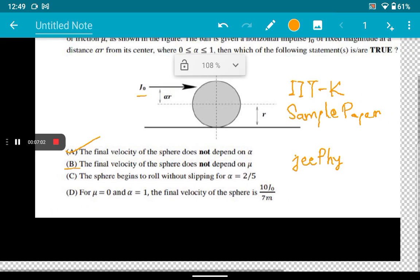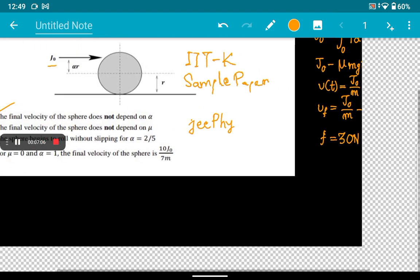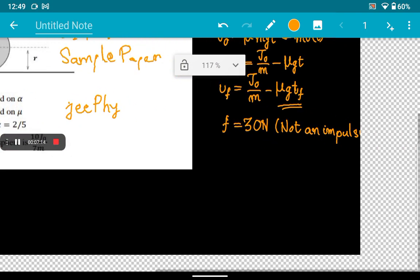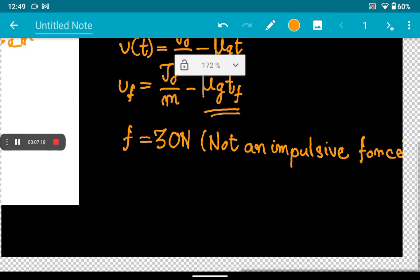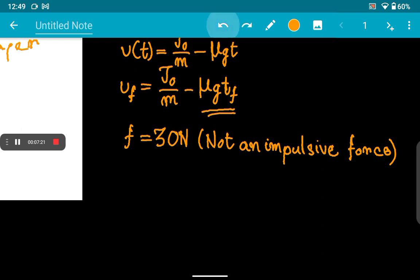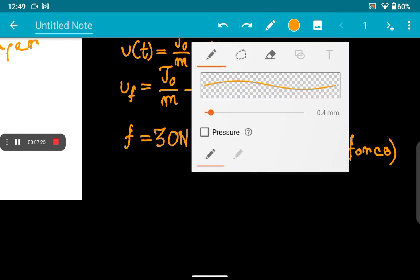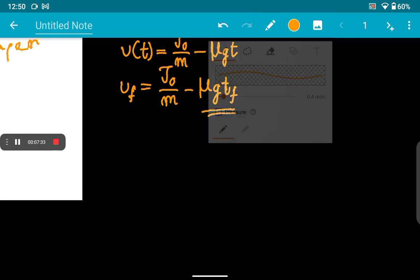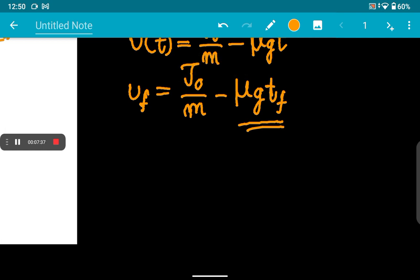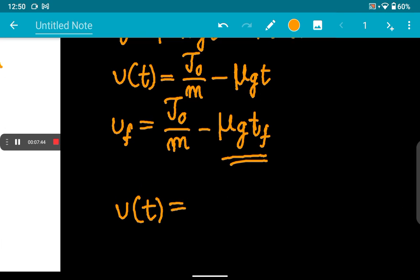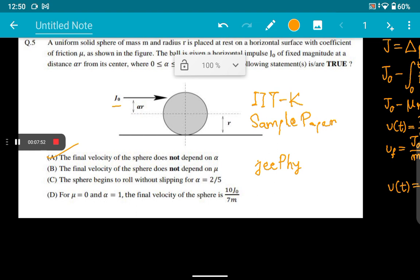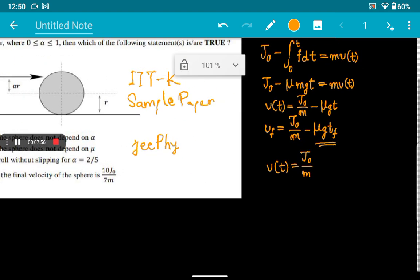Let's move on to C and D. We'll solve the D part first. It's given that for μ = 0 and α = 1, the final velocity of the sphere is 10J₀ divided by 7m. For μ = 0, we can write that v(t) is equal to J₀ by m. This is our final velocity. For the final velocity of the sphere being 10J₀ by 7m, this is absolutely incorrect. It's only J₀ by m.